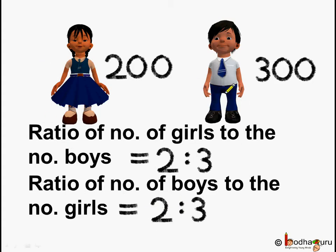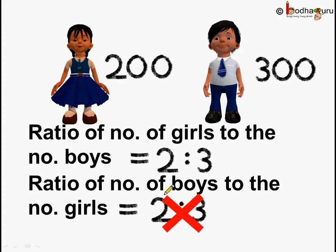Because nothing has changed — the number of girls remains 200 and the number of boys remains 300. No, this is wrong. The ratio of number of boys to the number of girls is not equal to 2 is to 3. Why? Let us understand it.